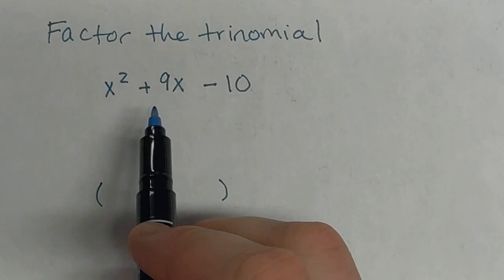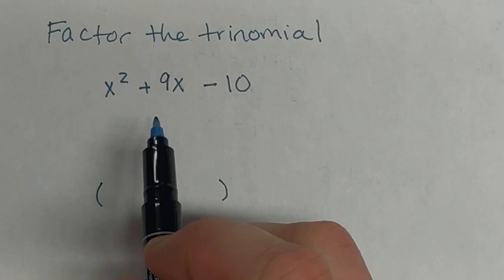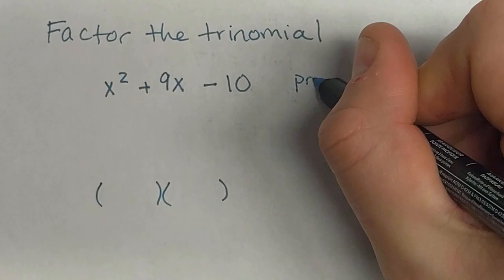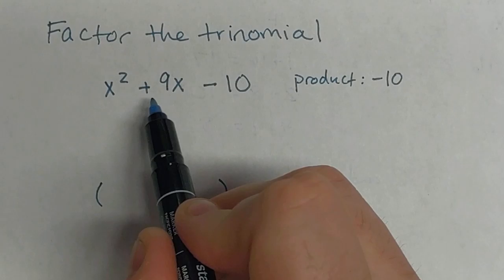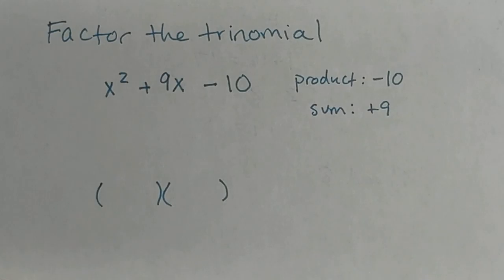Looking here, we're going to take our same rules that we applied before and figure out a product and a sum. The product is going to be this last term, so I need my product to be negative 10, and I need my sum to be what's in the middle, positive 9.